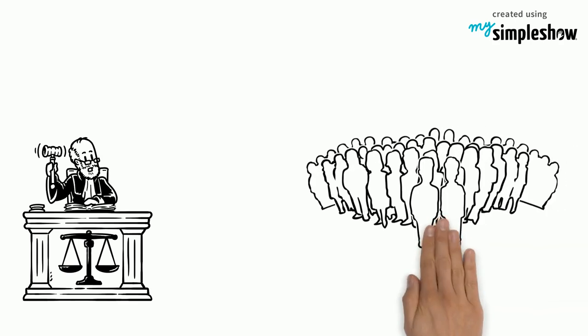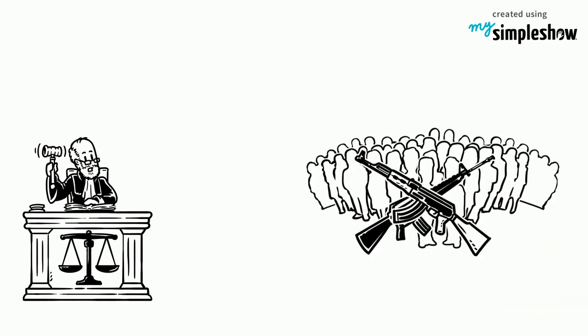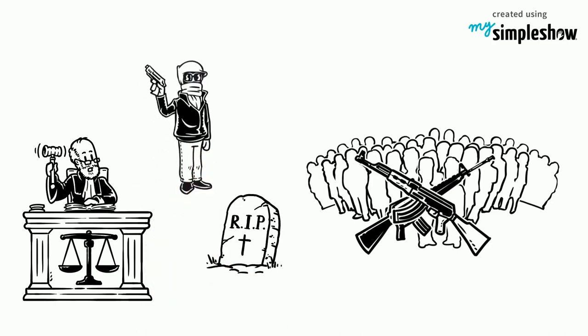Another controversial but effective method would be stricter gun laws. Making it harder for people to obtain automatic weapons can also help decrease the number of casualties and lessen tragedies by limiting the dangerous equipment the mentally ill can get their hands on.